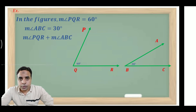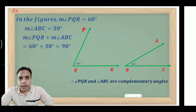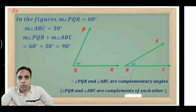Measurement angle PQR plus measurement angle ABC is equal to 60 degrees plus 30 degrees, and the addition will be 90 degrees. So we can see here that angle PQR and angle ABC are complementary angles. We have to remember that PQR and ABC are complementary angles.